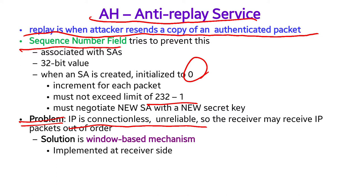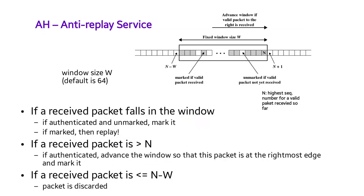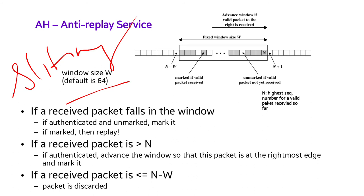To handle replay in the context of out-of-order IP delivery, a window-based mechanism is implemented at the receiver side. This is called the sliding window protocol. The window size default is 64. As the name indicates, the window slides.